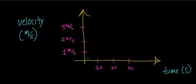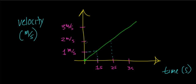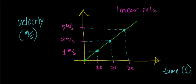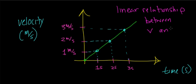An object traveling at constant acceleration has a nice linear relationship between velocity and time. For example, at each one-second interval, if the object is moving with constant acceleration, the velocity continuously increases at a rate of one meter per second. You can see from the graph that at each one-second interval the velocity changes by one meter per second — a linear relationship between velocity and time.